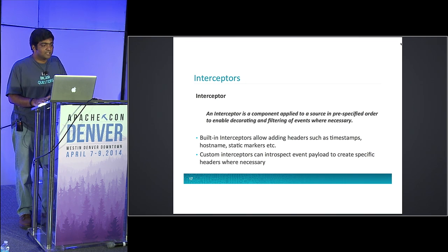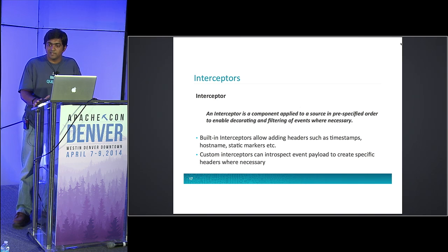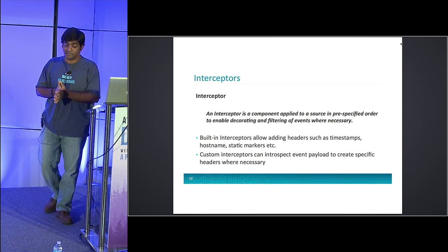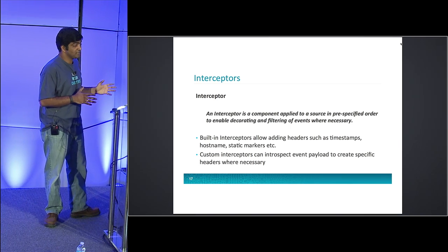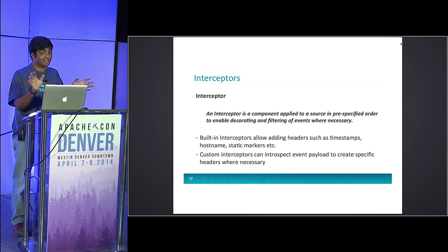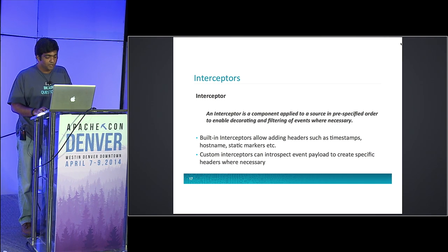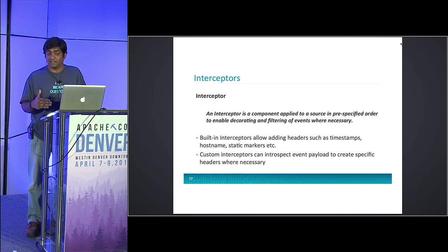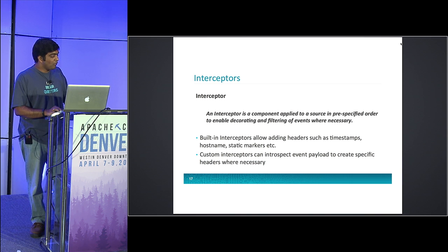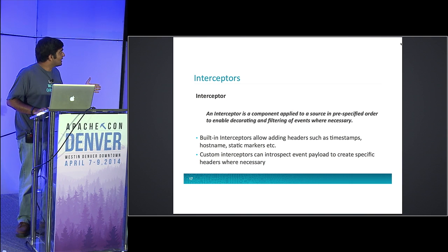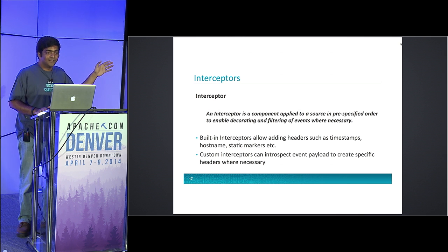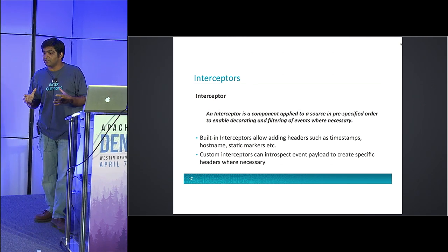An interceptor is a simple component which can modify or drop an event. Unfortunately, an interceptor cannot add new events — this is a protection against bad code filling up your channel. Each batch has a configurable number of events; you will be able to write only that many or fewer events. Built-in interceptors allow you to insert timestamps, hostnames, static markers, and similar metadata. These can be used to bucket events in HDFS.